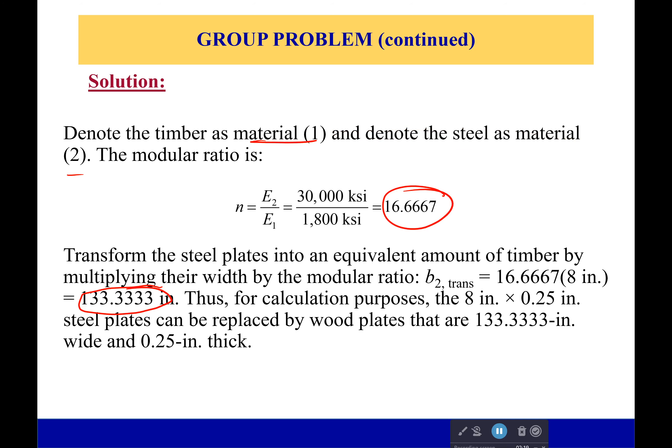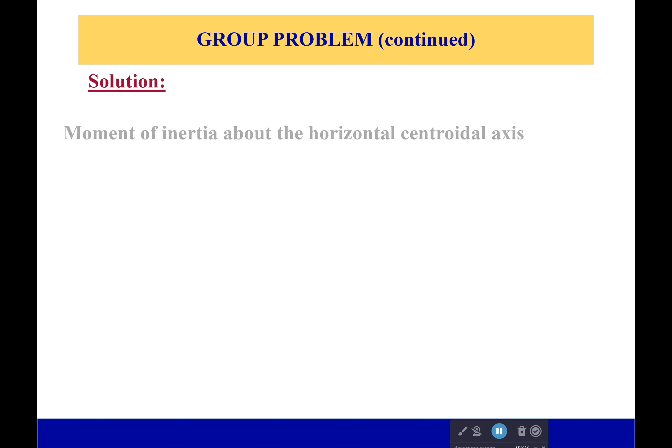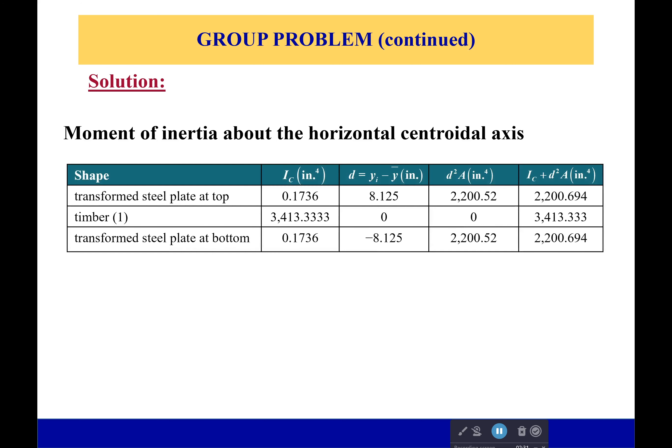So with our new 133 inch wide and quarter inch thick wood faces, we can begin to calculate moment of inertia. Luckily for us, the centroid is right there in the center. We don't have to do any calculations for it. Our beam was perfectly symmetric to begin with. So the moment inertia for rectangles is going to be one twelfth base height cubed. And so with that, calculating everything right there, good to go.